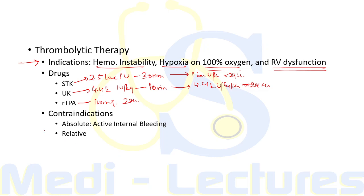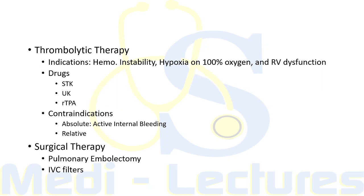Contraindications to thrombolytic therapy: the absolute contraindication is active internal bleeding. Relative contraindications include recent surgery, any bleeding disorder, hypertension with systolic BP more than 200 and diastolic BP more than 100, and hypertensive retinopathy. Surgical therapy for pulmonary embolism includes pulmonary embolectomy and inferior vena cava filters, which prevent deep vein thrombi from entering the pulmonary circulation.